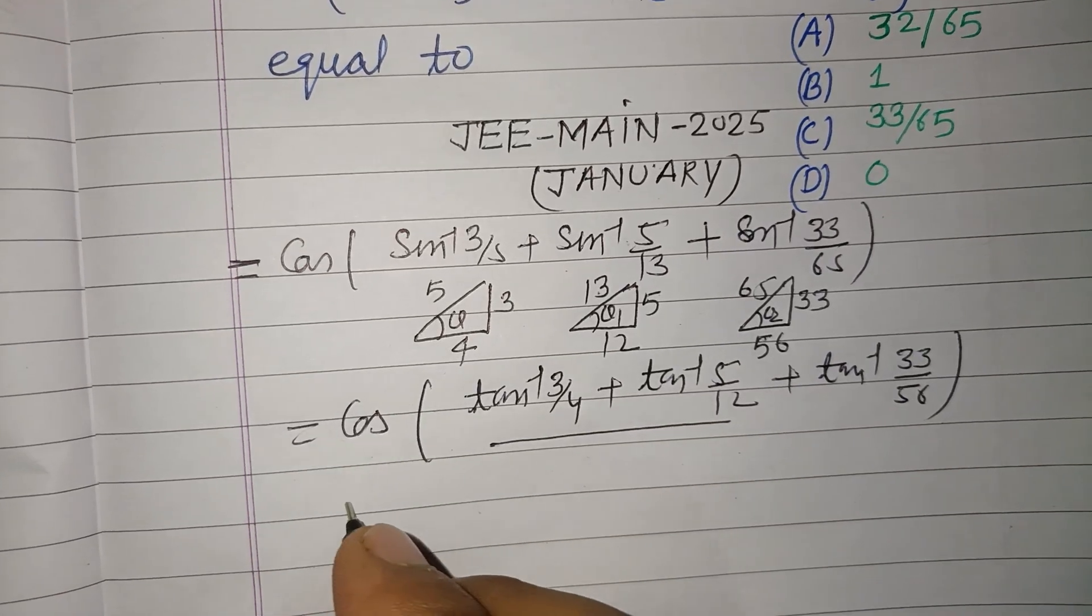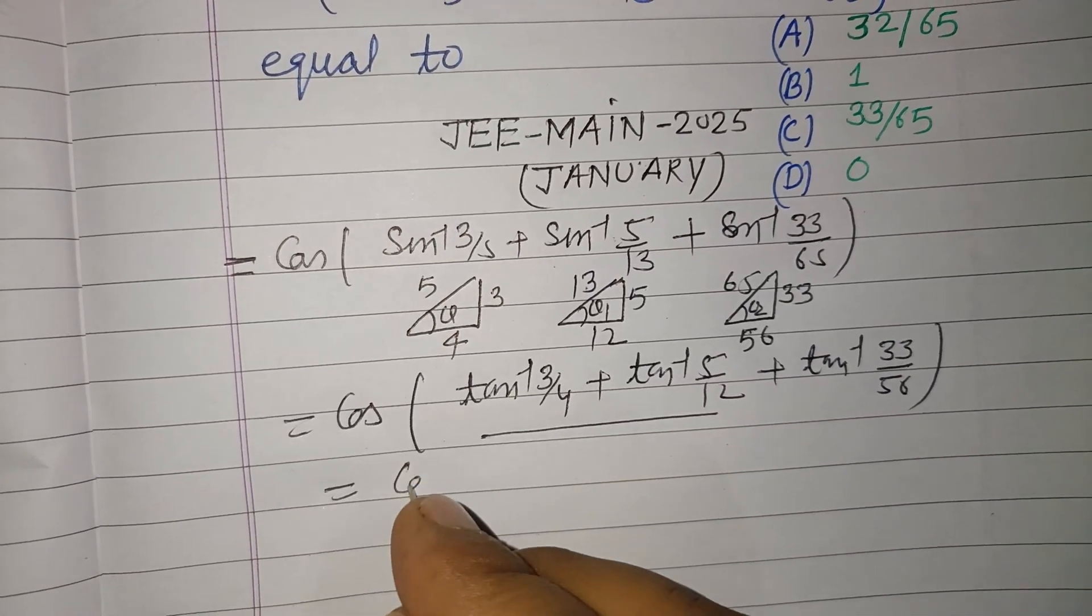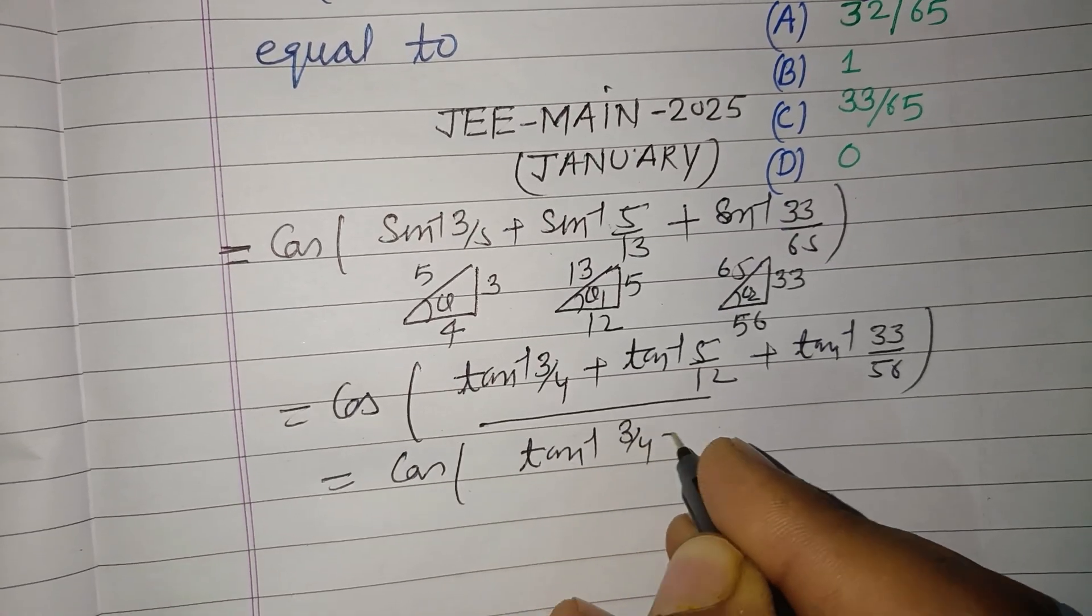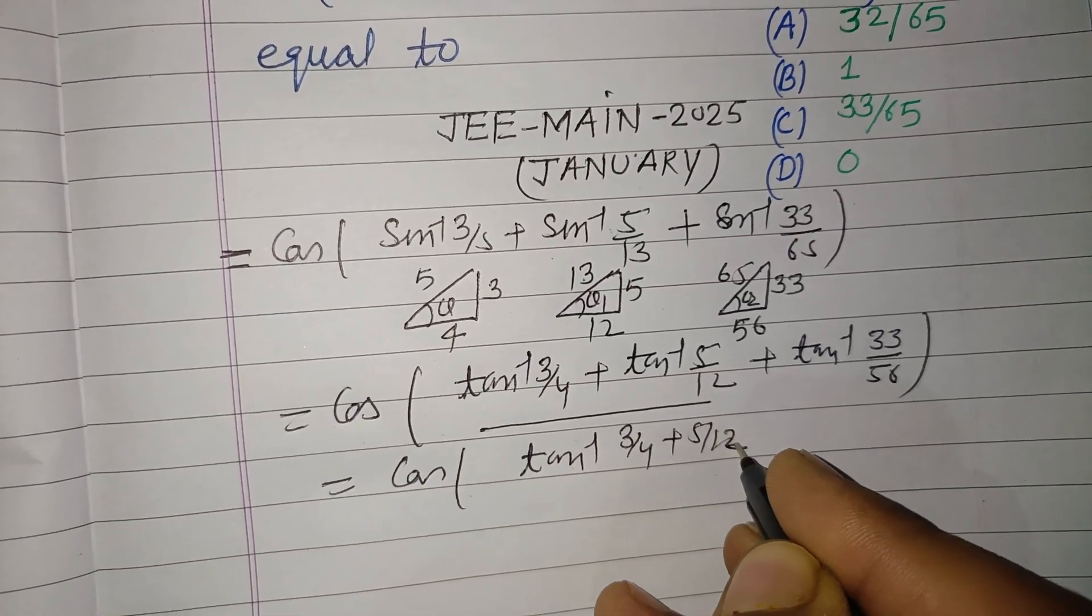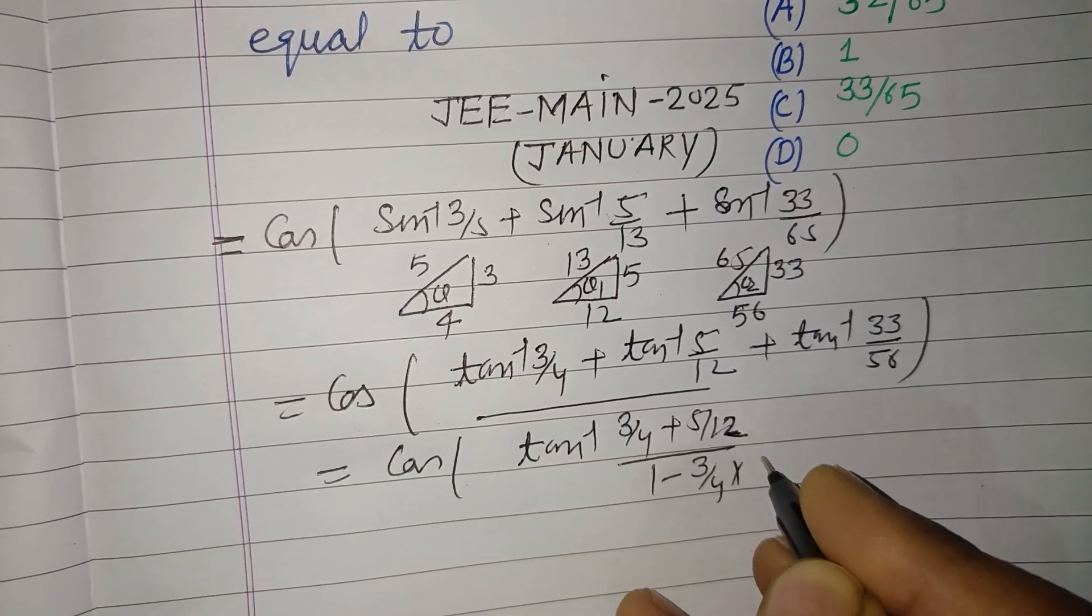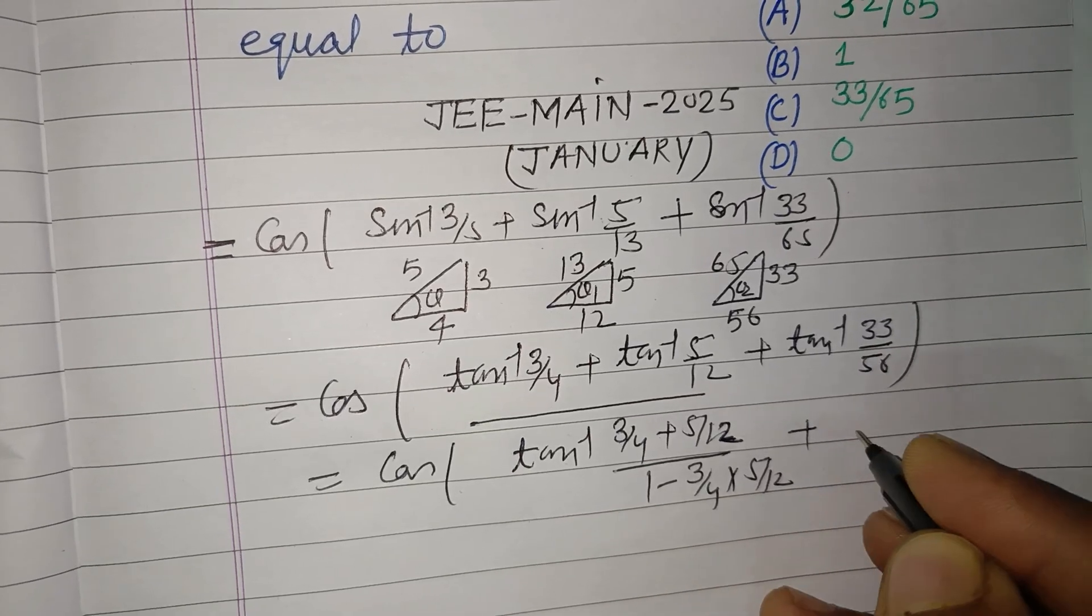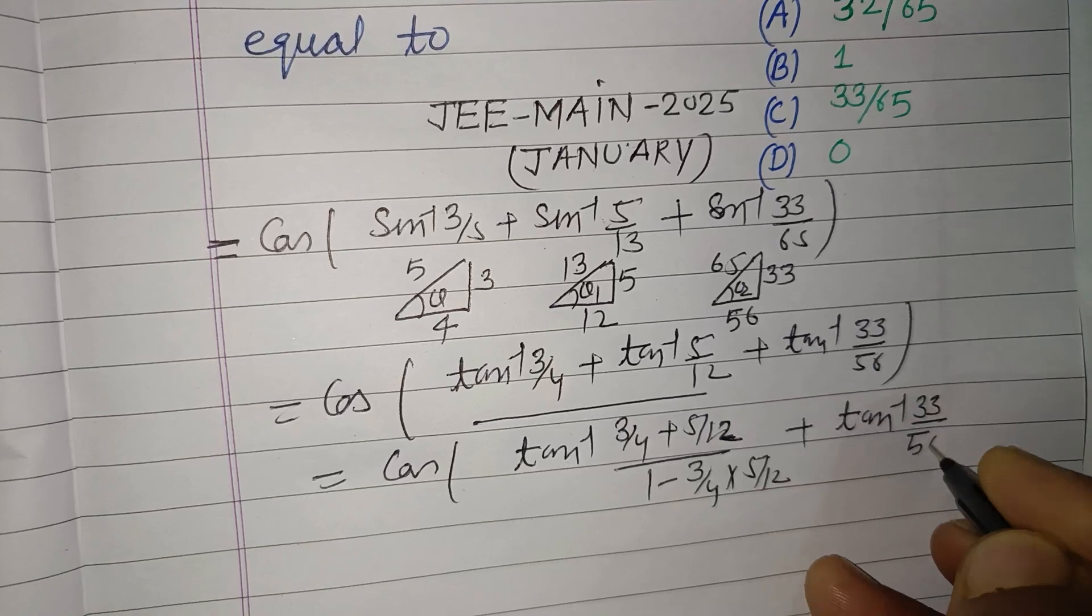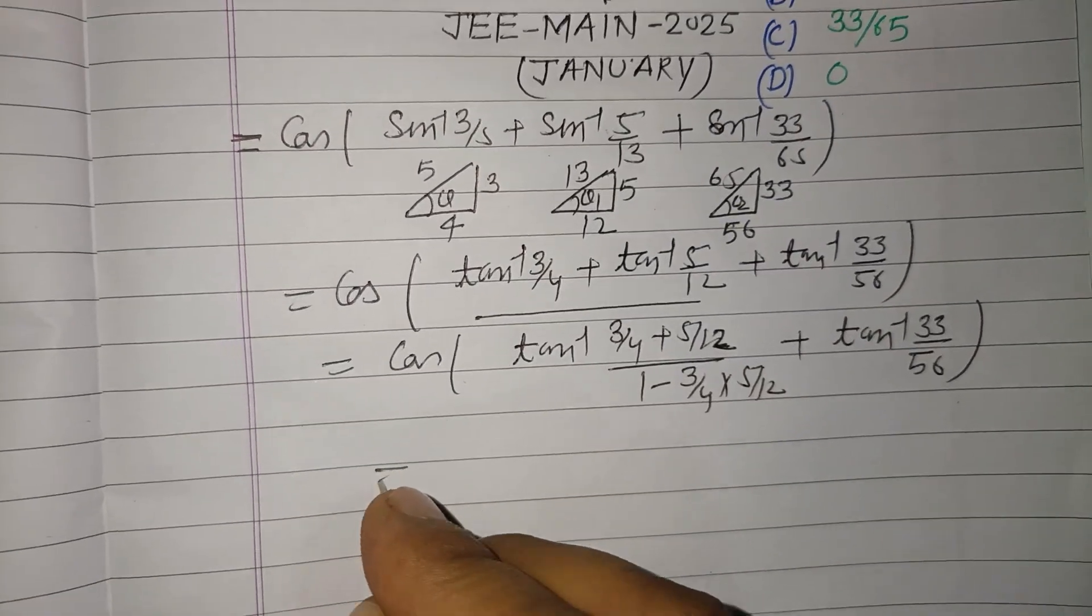Now make single by using tan⁻¹(a) + tan⁻¹(b) formula. So this becomes tan⁻¹((3/4 + 5/12)/(1 - 3/4 × 5/12)) + tan⁻¹(33/56).